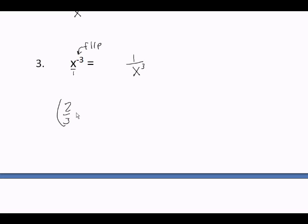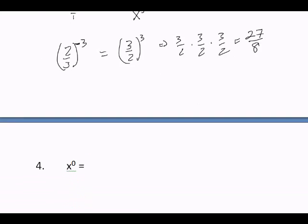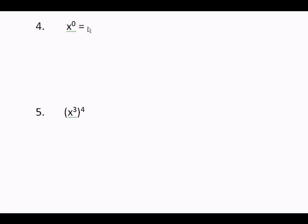Here's another example of the negative power rule with a fraction: (2/3) to the negative 3. The negative is attached to the parentheses, so we flip the entire fraction — 2/3 becomes 3/2 — and the power of 3 stays attached. So 3/2 to the third power equals 3/2 times 3/2 times 3/2, which equals 27 over 8. Multiply the tops: 3 times 3 times 3 is 27. Multiply the bottoms: 2 times 2 times 2 is 8.